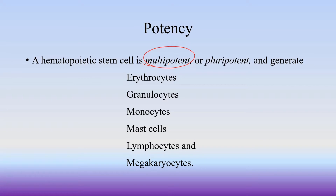So this means that the hematopoietic stem cell is not pluripotent. Totipotent means the capacity to form a whole organism. Multipotent means the capacity to form multiple cell types but not a whole organism. So these hematopoietic stem cells generate these types of cells.